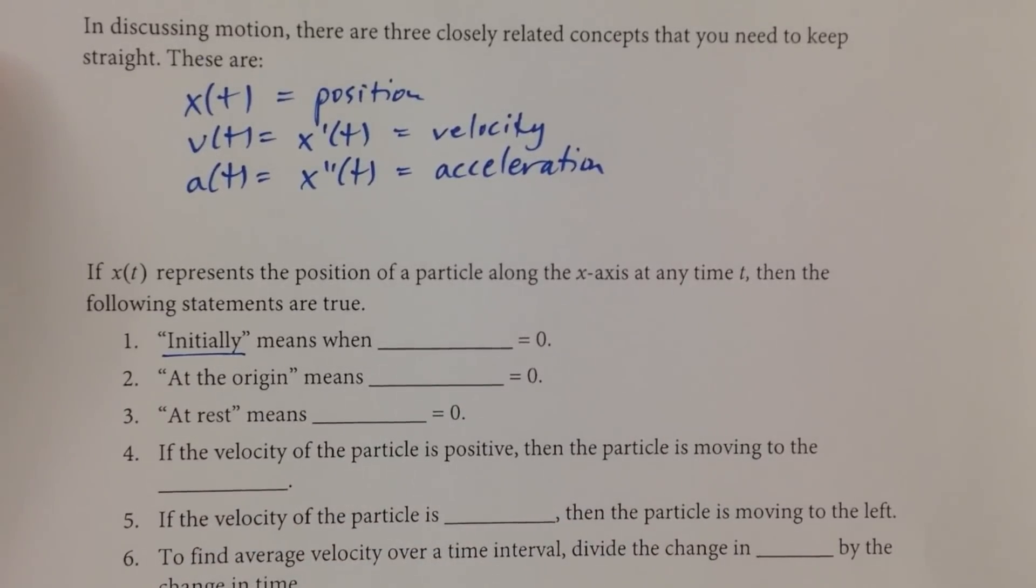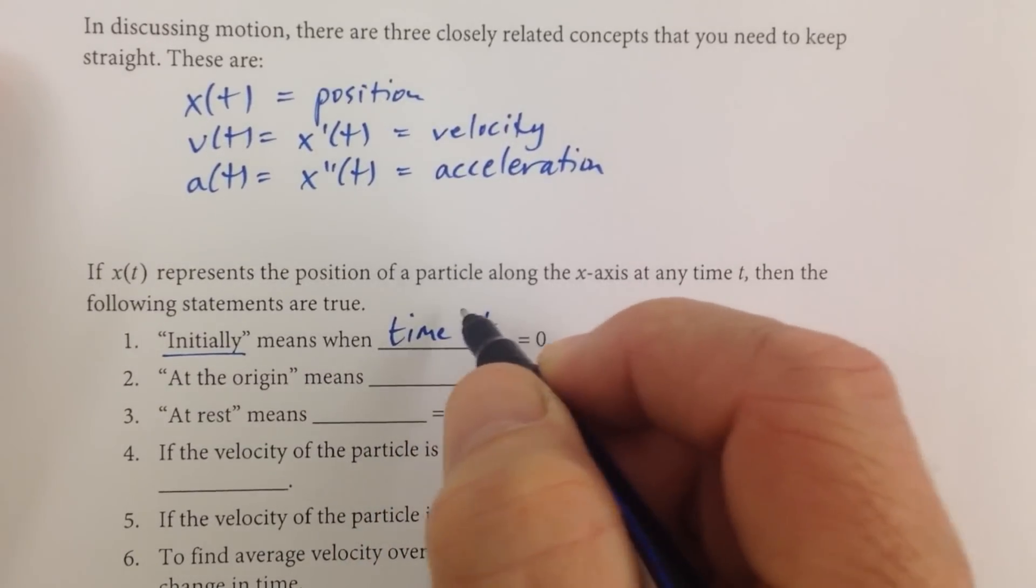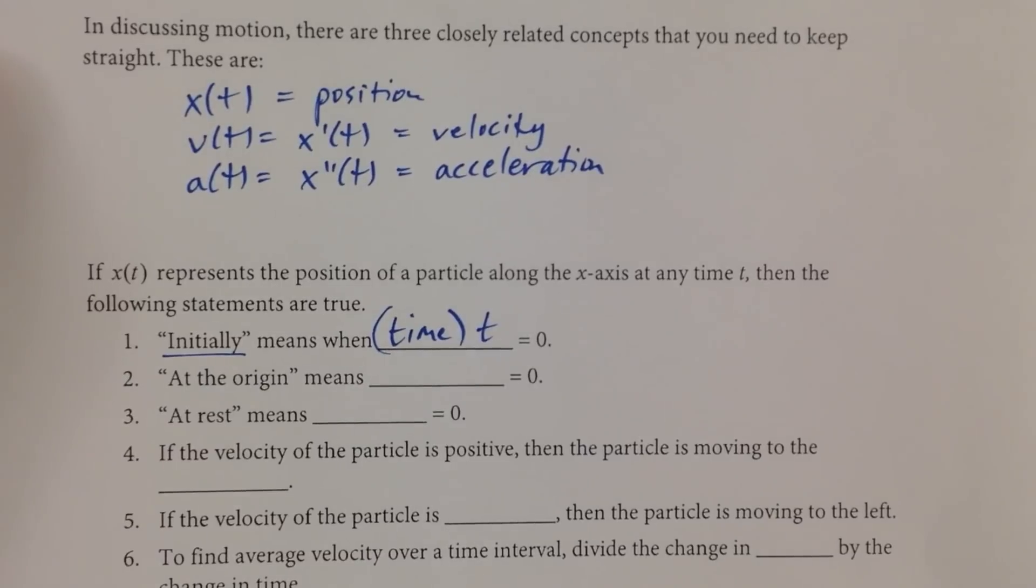Now, you're going to hear terms like initially. So initially means what's happening? Is it position, velocity, acceleration? Well, that's actually time, when time t is equal to zero. So initially, in the beginning, that's when t is equal to zero.